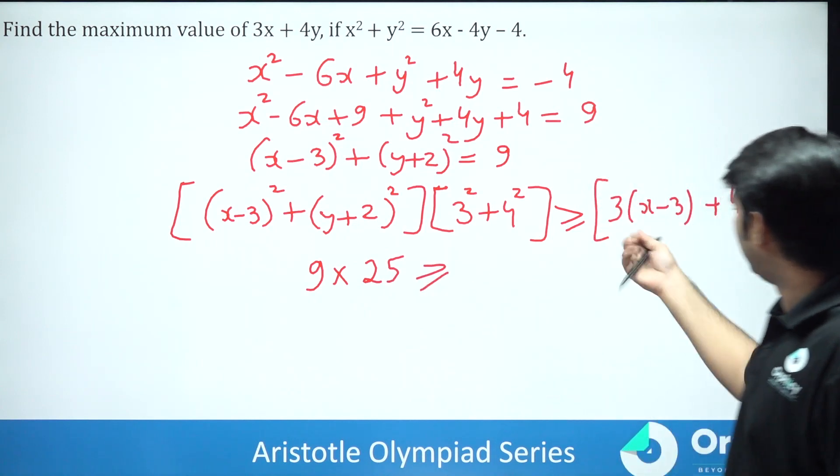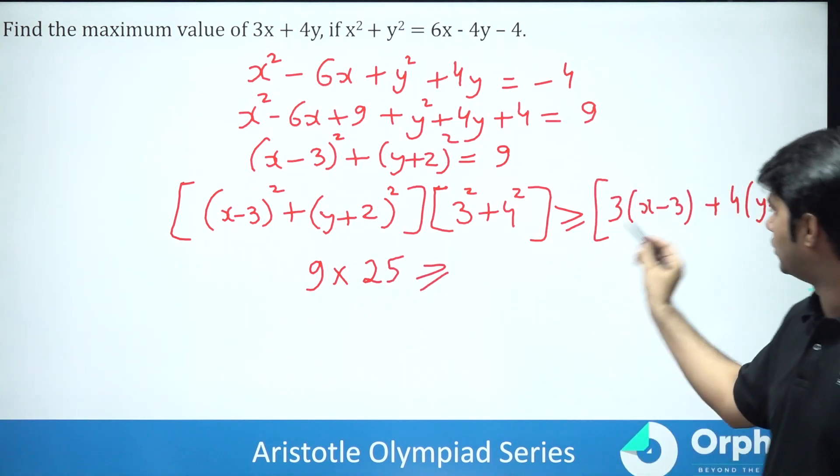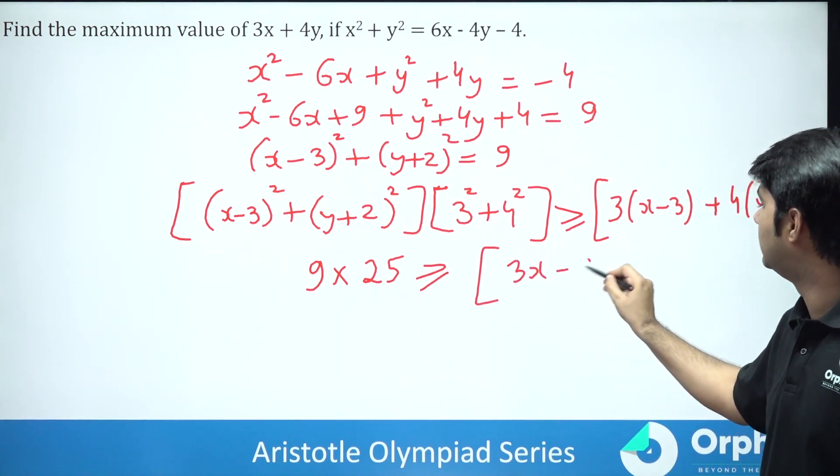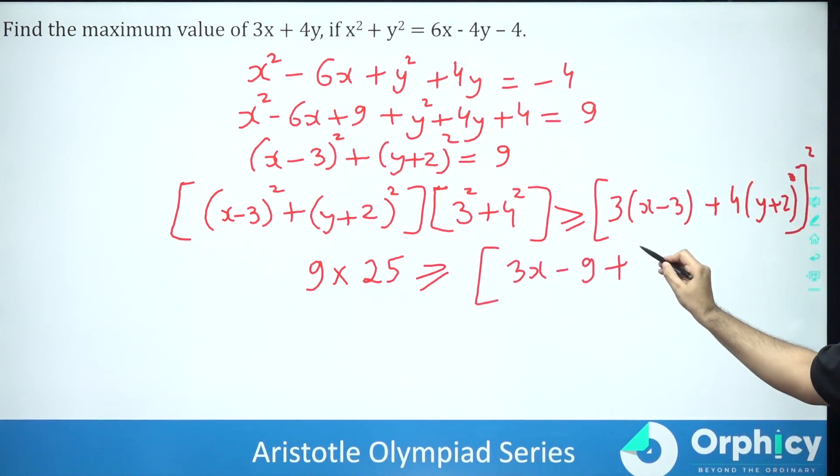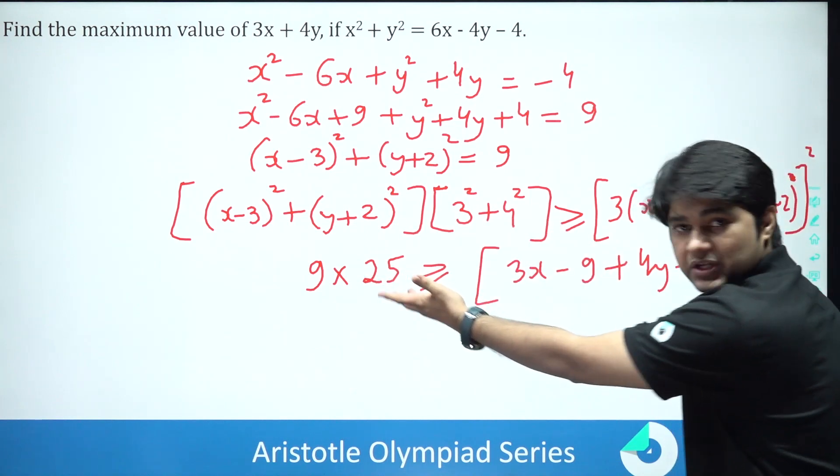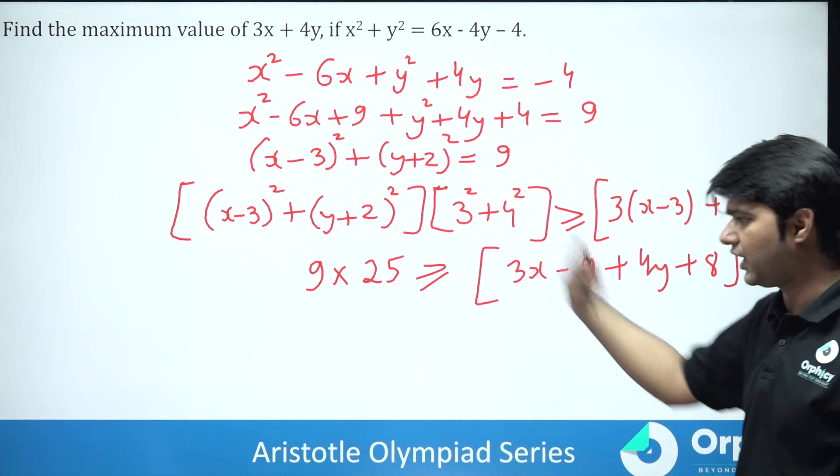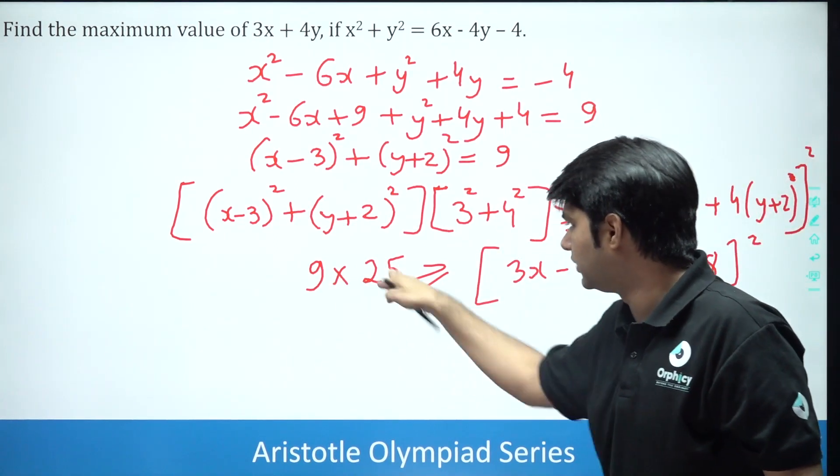Now this will become greater than or equal to, now this will expand. Let's start expanding. So this will be your 3x minus 9 plus 4y plus 8 the whole square. Now the whole square is the whole square.